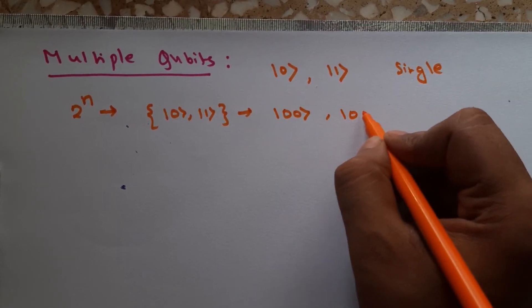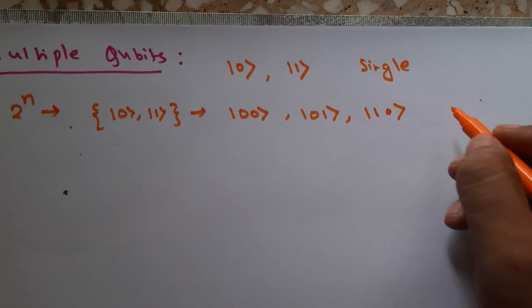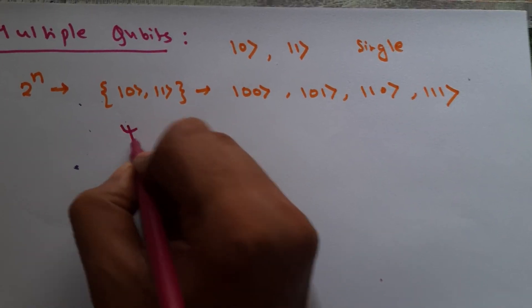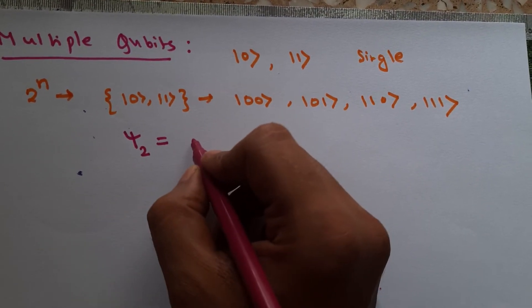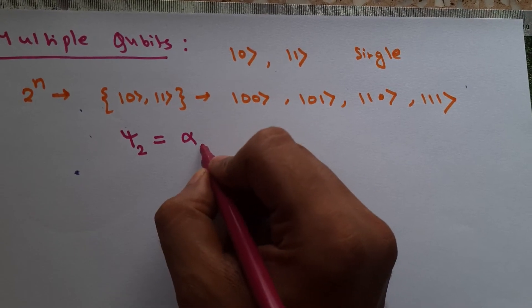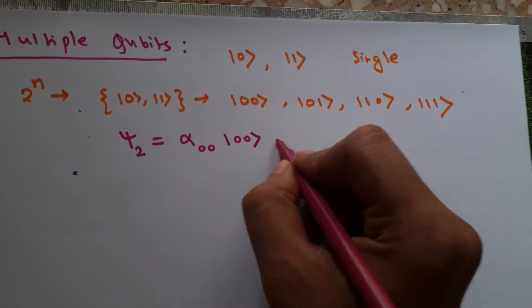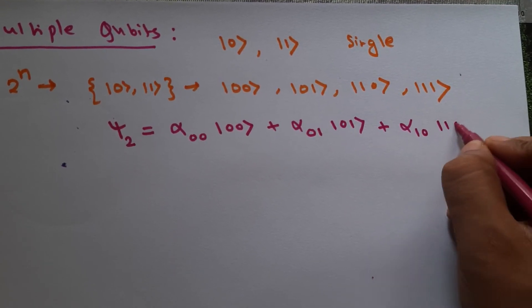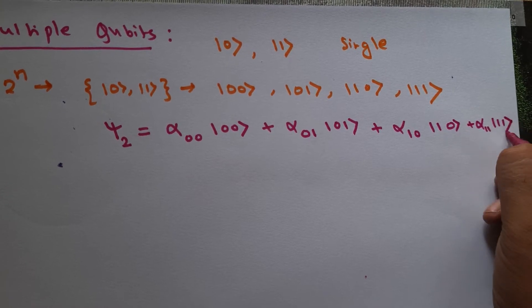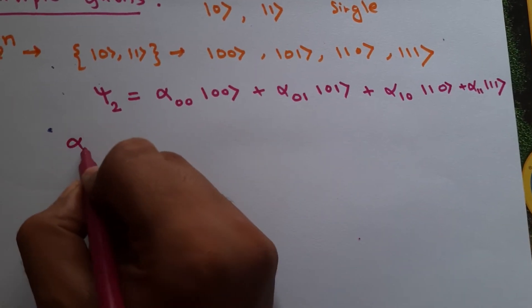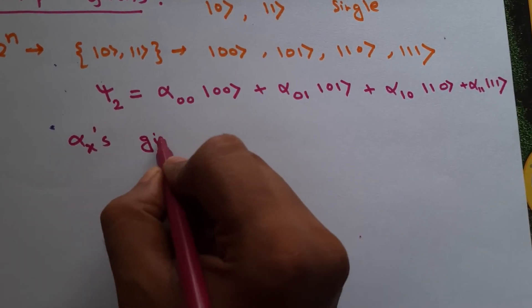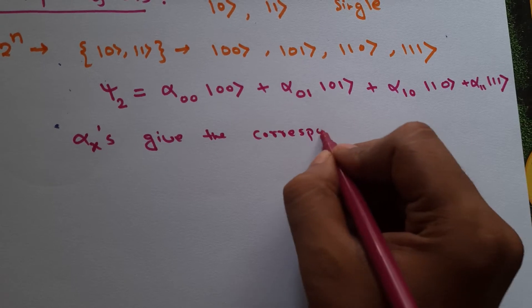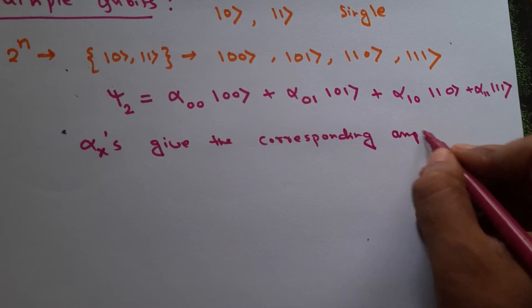Those are the possible basis states. In general, a two-qubit state is represented as: alpha_00 |00⟩ + alpha_01 |01⟩ + alpha_10 |10⟩ + alpha_11 |11⟩, where each alpha gives the corresponding amplitude.